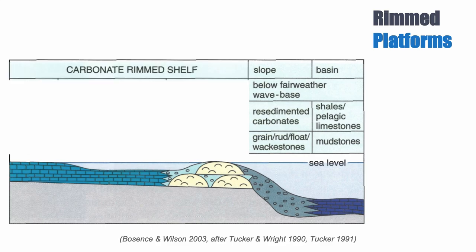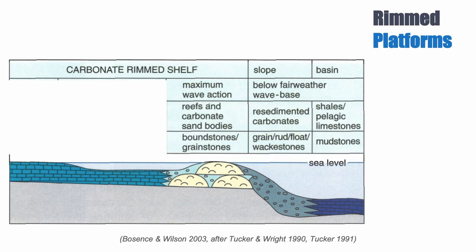Beyond and including the reef, this is known as the carbonate-rimmed shelf itself. The reef is the area of maximum wave energy, as we've already discussed. What you can expect at this location are reefs and carbonate sandbodies — shoals and things like this. In terms of fabric, expect boundstones, which is the reef itself, or grainstone — very coarse fabric that indicates high energy, as we discussed when we looked at the Dunham classification.